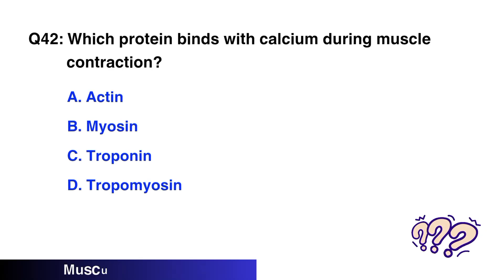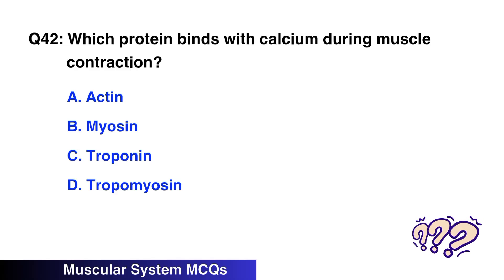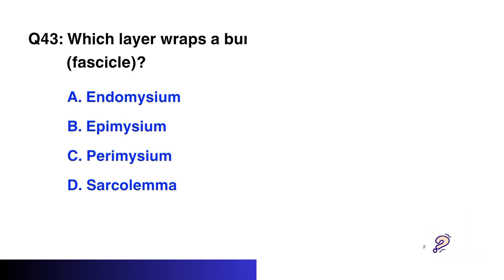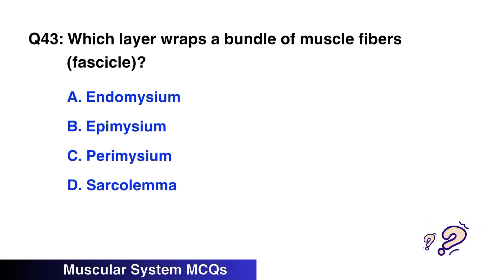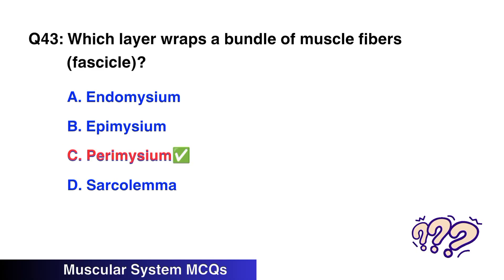Question No. 42: Which protein binds with calcium during muscle contraction? The right option is C: Troponin. Question No. 43: Which layer wraps a bundle of muscle fibers? The right option is C: Perimysium.